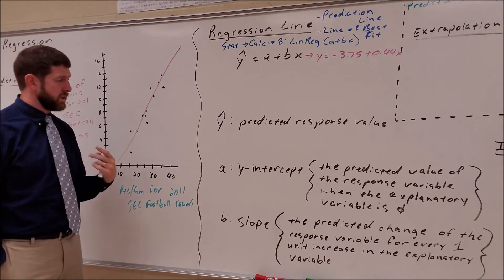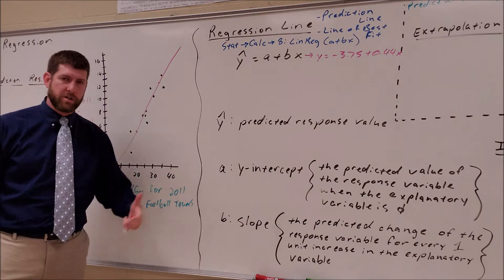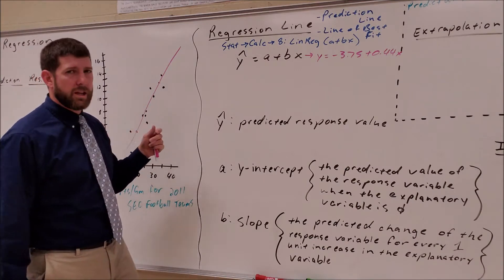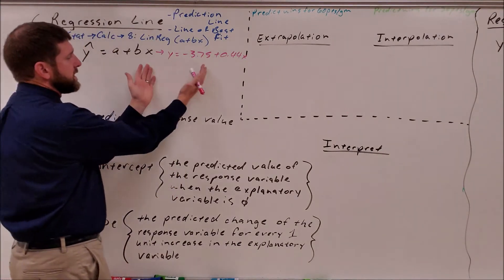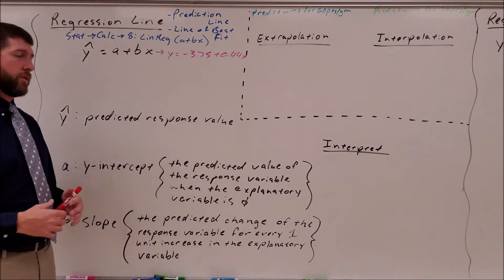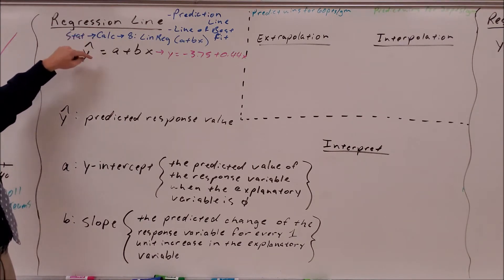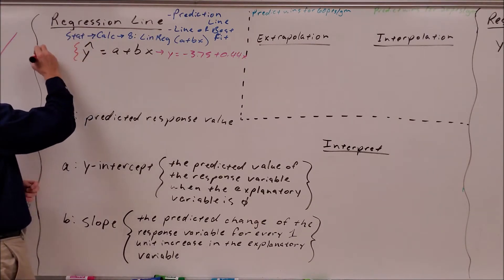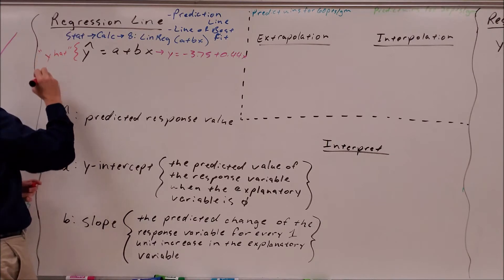When we write the regression equation, we don't write it as plain Y equals — we write it in context. The proper notation uses Y-hat, which is a Y with a hat on top of it. Y-hat means the predicted response value. Since our Y value is the number of wins, Y-hat represents the predicted number of wins. We denote it as an approximation because we know it won't match exactly — it's what should happen for a certain points-per-game average.